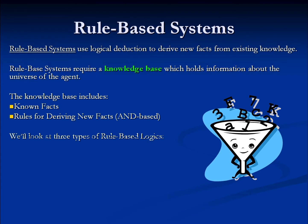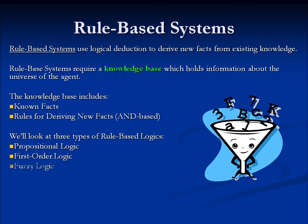We're going to take a look at three different types of rule-based systems. Propositional logic, which is based entirely on static identifiers. First-order logic, which introduces some variables into the mix. And fuzzy logic, where we dispense with the idea of true and false as the only possibilities, and have a sliding scale of truth between zero and one.